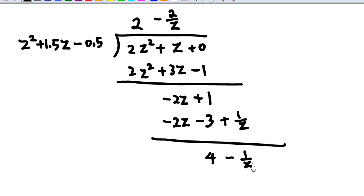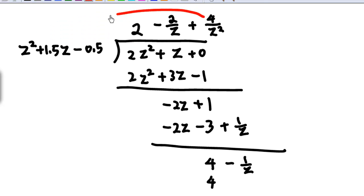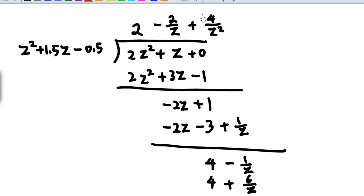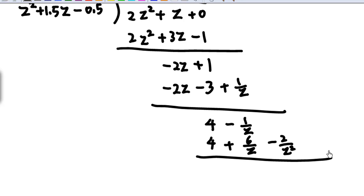Next, I need to get 4 over Z squared, so I multiply by 4 over Z squared. Z squared times 4 over Z squared gives 4; 4 over Z squared times 1.5Z gives 6 over Z; and 4 over Z squared times minus 0.5 gives minus 2 over Z squared. After subtraction: 4 minus 4 is 0; minus 1 over Z minus 6 over Z gives minus 7 over Z; then minus 2 over Z squared.